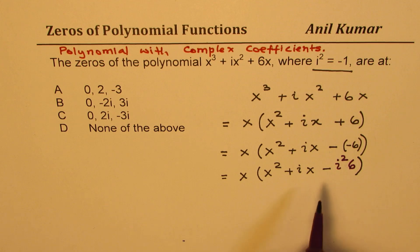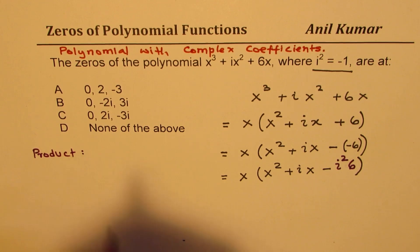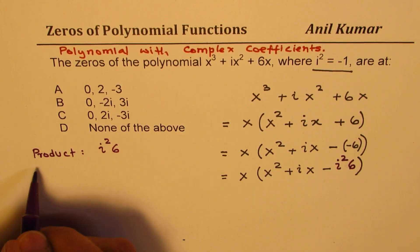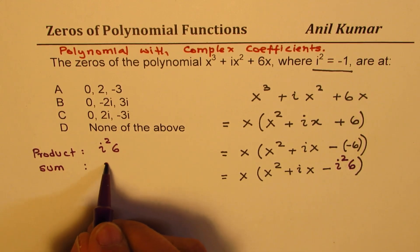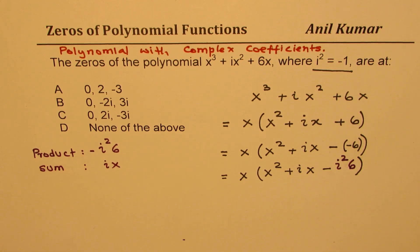Perfect. Now after doing this we can look into sum and product. So we are looking for a product which is -i²·6, and we are looking for a sum which is ix. I hope this is absolutely clear: the technique used to factor a trinomial with complex coefficients.